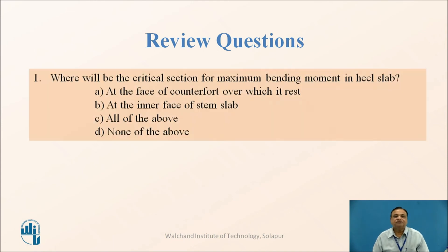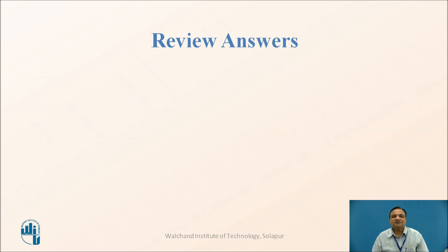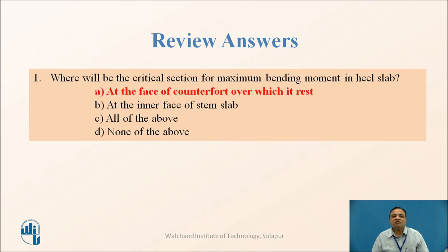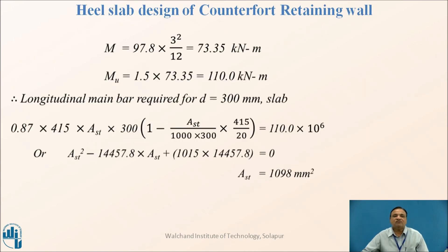Review question: Where is the critical section for maximum bending moment in a heel slab? Options are: at the face of the counterfort over which it rests; at the inner face of the stem slab; all of the above; or none of the above. The answer is at the face of the counterfort over which it rests, because it is a continuous slab. Bending moment = WL²/12 for one-way continuous slab.